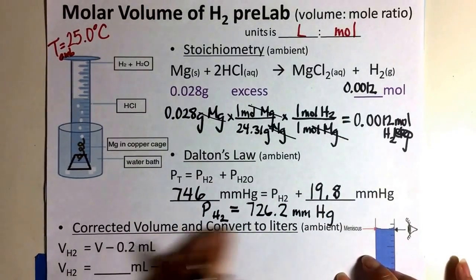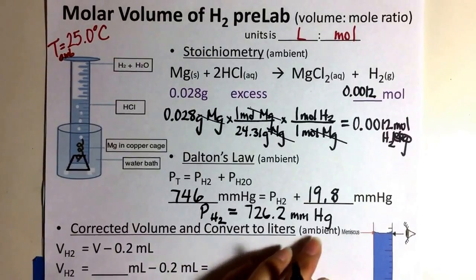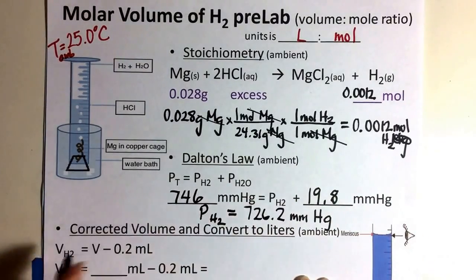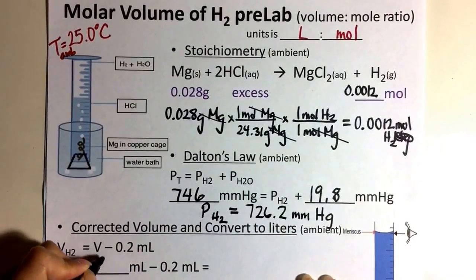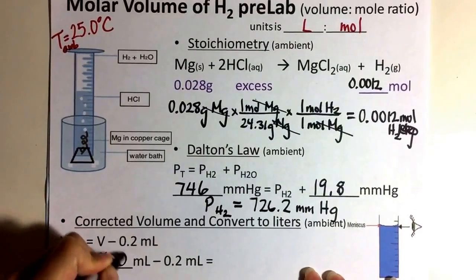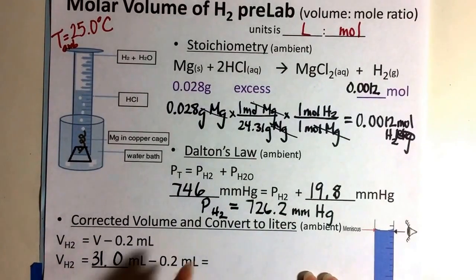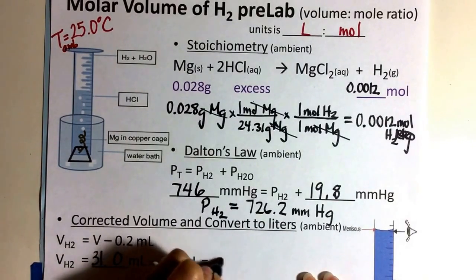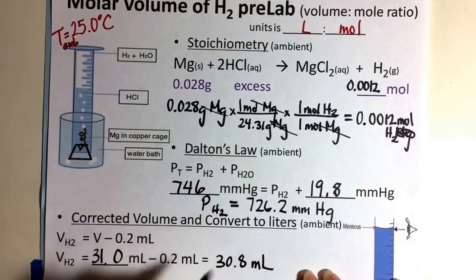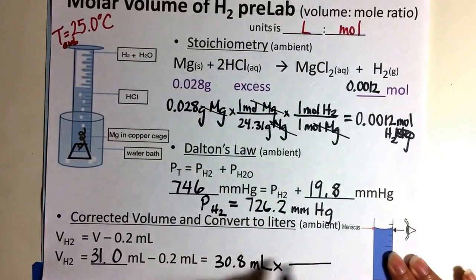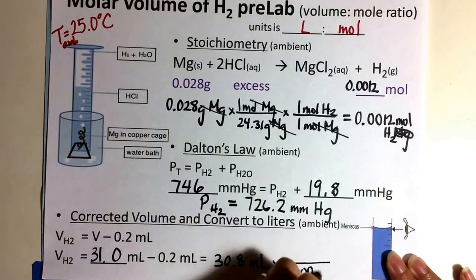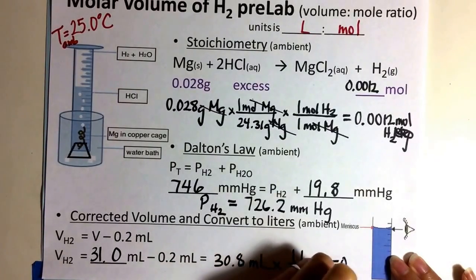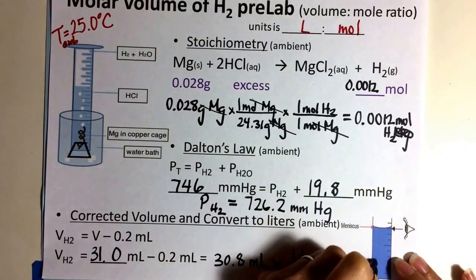Now let's talk about the corrective volume, and we're also going to convert it to liters as well. So we're looking at the ambient volume. So whatever you read as far as your meniscus when it was inverted was 31.0 milliliters. But now you correct for that because of the inverted meniscus. So then now it is 30.8 milliliters. Now I'm going to convert that to liters right off the bat as well. So I'm going to take a thousand milliliters in one liter. And I will get the movement of three spaces over. So I get 0.0308 liters.